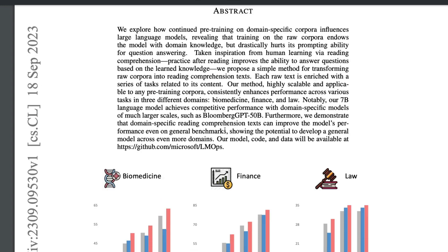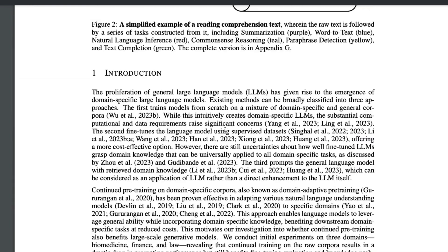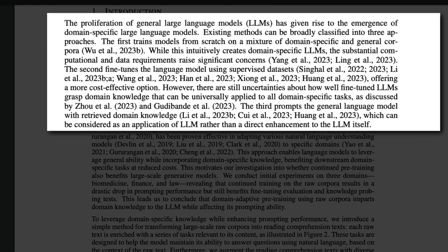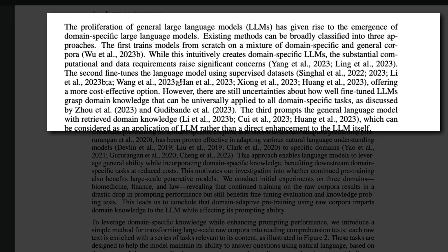There are three different ways a large language model can exist. First, the vanilla form: a large language model trained from scratch on a mixture of domain-specific and general corpora. While this intuitively creates domain-specific LLMs, the data requirements for domain-specific knowledge are high.